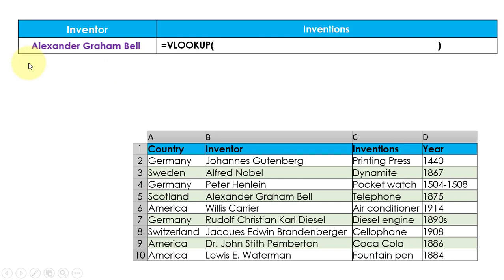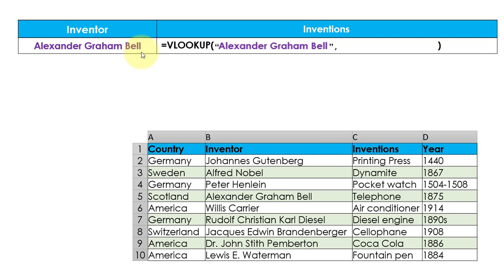The first parameter is lookup value. Here we can pass either the cell reference of the inventor or we can pass the inventor's name directly. Here I am passing the inventor's name in double quotes as the lookup value. The second parameter is table array — to decide its range we need to find the column that contains the name of the inventor.